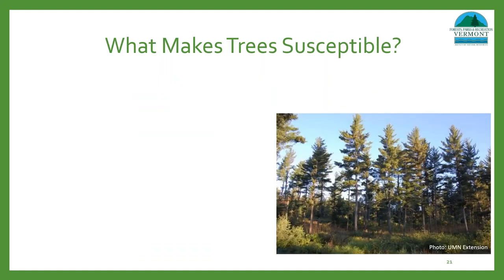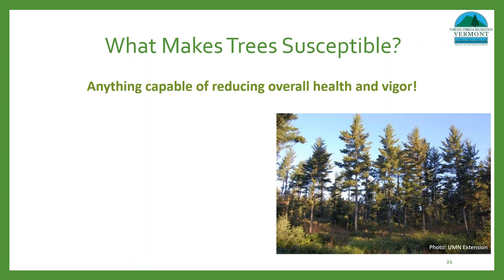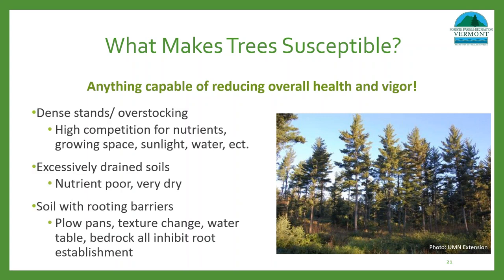What makes trees susceptible to Caliciopsis infection? Like I previously mentioned, this is an opportunistic pathogen, so anything capable of reducing overall tree health and vigor is going to make your tree more susceptible. Environments that decline tree health — including dense stands, excessively drained soils, and soils with rooting barriers — will all predispose a tree to this type of pathogen. Not only will these factors make it worse for the tree, but environments like those dense and overstocked stands make the environment much more favorable for fungal growth.